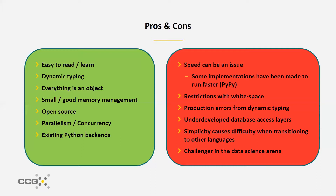The simplicity of Python can cause issues if a developer encounters code in a different language — for example, a Python developer looking at R code may find it more difficult to understand than an R developer looking at Python code. Compared to R, Python is also a relative challenger in the data science arena. Although it's growing more and more popular, R is still the most popular language for data science and has a few more packages and functionalities compared to Python.